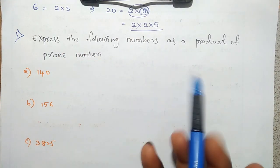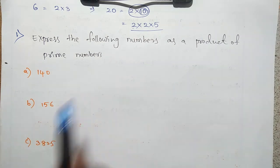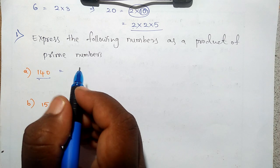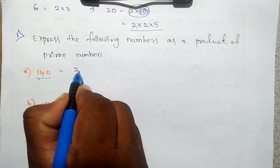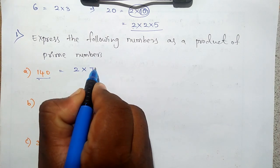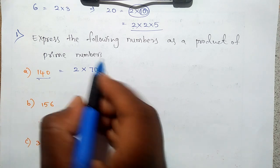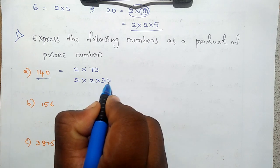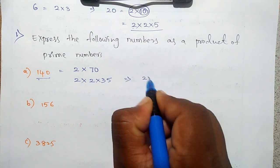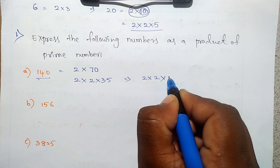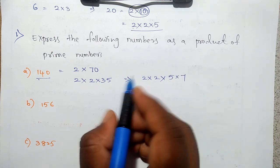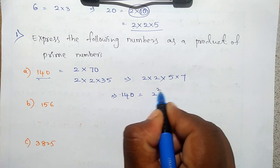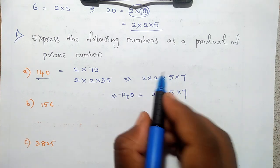Express the following numbers as a product of prime numbers. Here 140 is given. I am writing 140 as 2 into 70, then 70 as 2 into 35, then 35 as 5 into 7. So 140 is equal to 2 squared into 5 into 7.